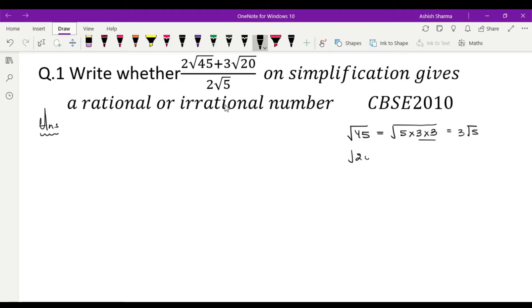Aise hi root 20, agar aap ise simplify kare hai: 2, 2's are 4, 5's are 20. Prime factorization aap ne kar liya, yeh 2 ka pair ban gaya, 2 will come out, 2 root 5.